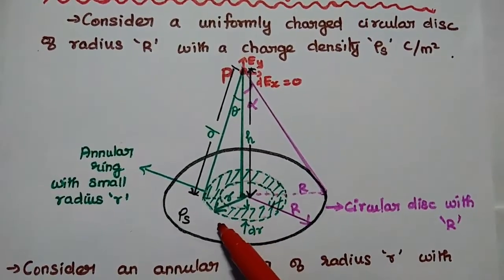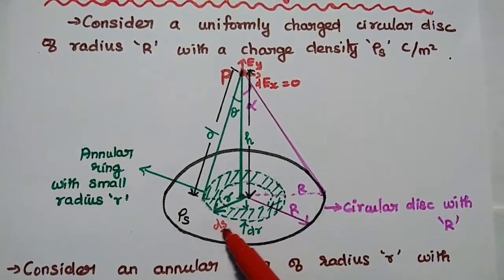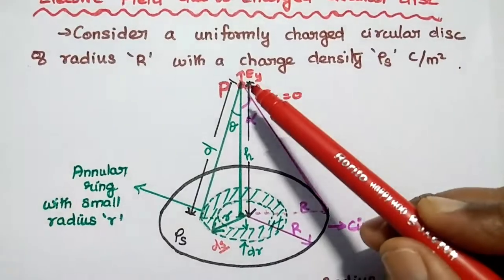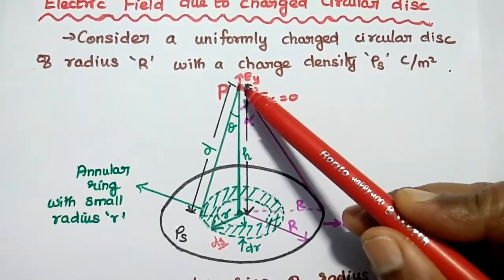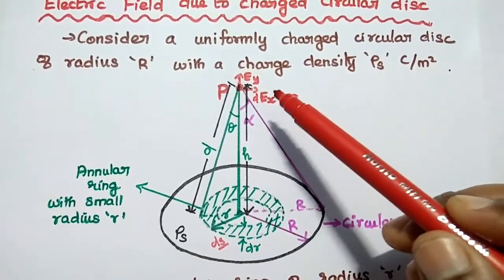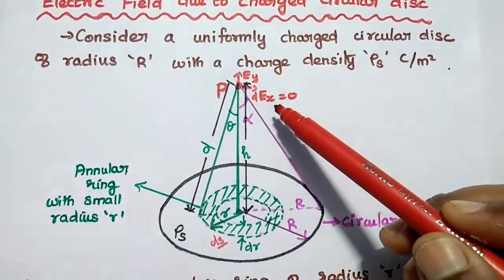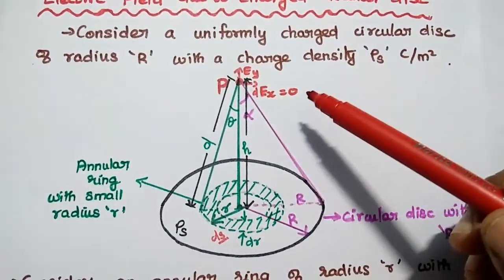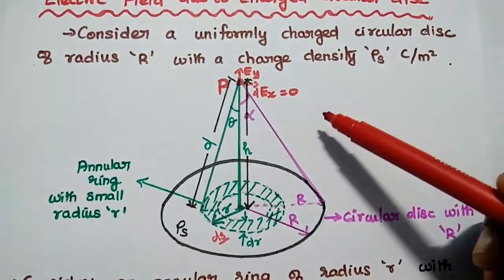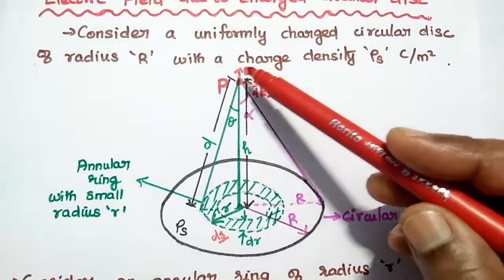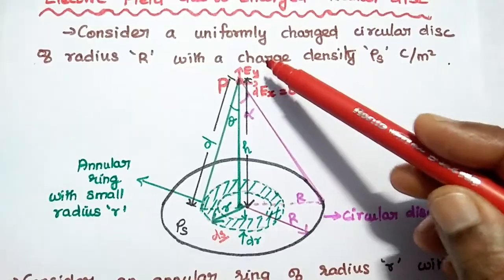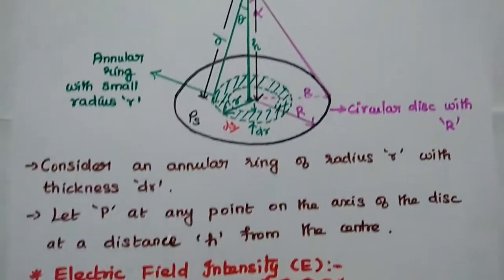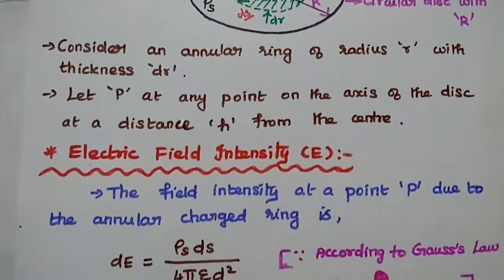The small surface area can be represented as ds. At point P, the electric field has both horizontal and vertical components. But for this circular disk, the horizontal electric field becomes zero. So we can have only the vertical component, represented as E y. Let's start the derivation.